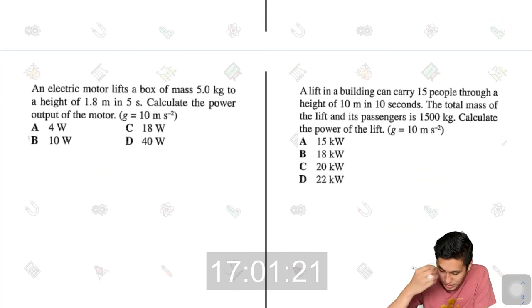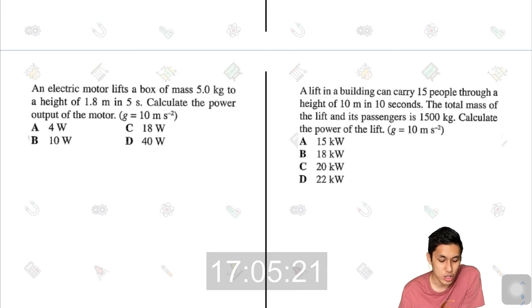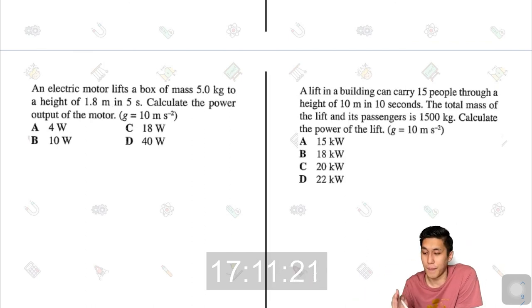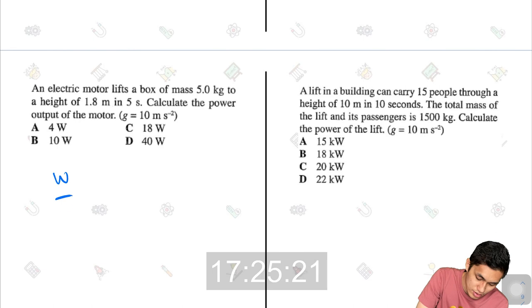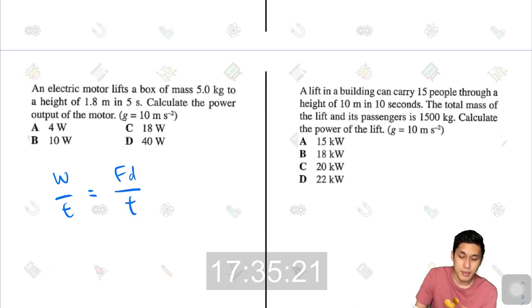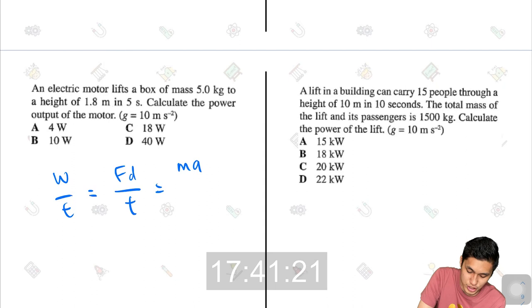Next. An electric motor lifts a box of mass 5 kg to a height of 1.8 meters in 5 seconds. Calculate the power output of the motor. The power would be the work done divided by the time. The work done per time. The work done would be the force times the distance. Force times distance divide by time. And force, of course, means MA, the mass times acceleration. Or in this case, the acceleration would be g, gravitational acceleration. So mass times g times distance divided by time.